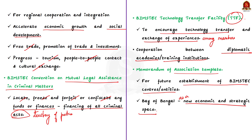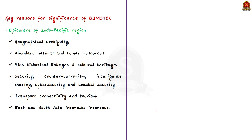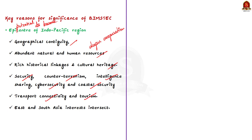Having seen the current areas of interest of BIMSTEC, let us understand the growing value of BIMSTEC through three key reasons. The first reason is BIMSTEC has the potential to become the epicenter of the Indo-Pacific region because of its geographical contiguity, abundant natural and human resources, and enriched historical linkages and cultural heritage. There has been tangible progress in BIMSTEC cooperation in areas including security, counter-terrorism, intelligence sharing, cyber security, coastal security, transport connectivity and tourism. The Indo-Pacific region is a place where the interests of major powers of East and South Asia intersect, giving BIMSTEC tremendous value.